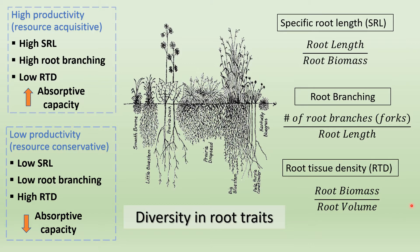RTD is also an indicator of root resource acquisition versus resource utilization trade-off. Researchers have hypothesized that the development of root traits follows a one-dimensional axis representing trade-offs between resource acquisition and resource conservation. On one end, you have high-productive, cheaply constructed roots with traits like high specific root length, high root branching, and low RTD — a root system with high absorptive capacity. On the other end, you have more resource-conservative roots that are costly to construct with longer lifespan but low absorptive capacity, with traits such as low SRL, low degree of branching, and high RTD. The idea is that these traits would develop in coordination with each other on either end of the spectrum.